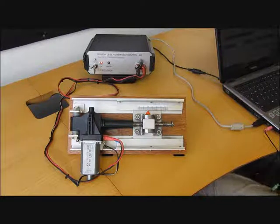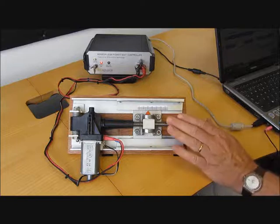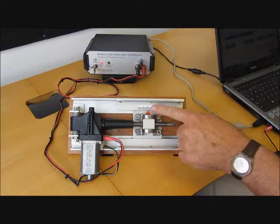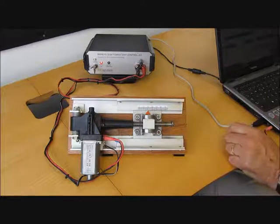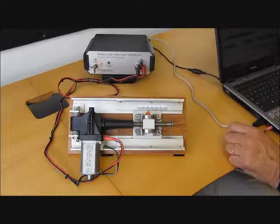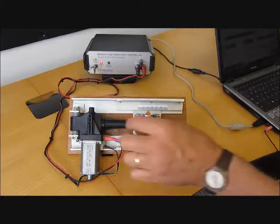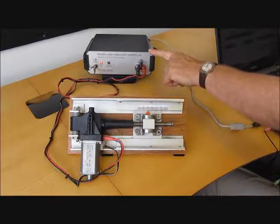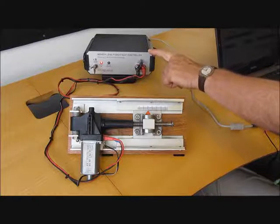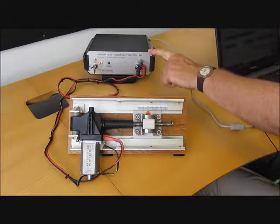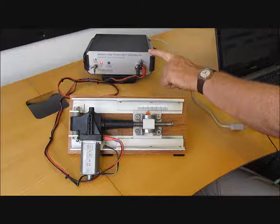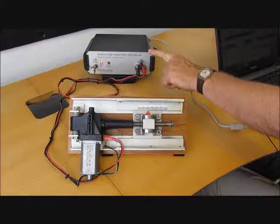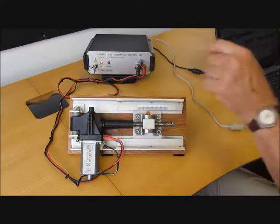What we have here is a motor with an actuator, and you can see there's a scale on here so we can see where the actuator is. The motor is a normal seat motor from a car, and this is connected, the power wires are connected to our controller box here, which contains a small detection circuit to detect the voltage transients every time the motor commutates.